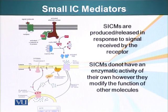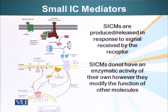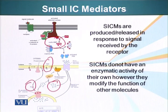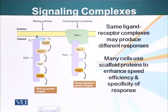Another important part of the signaling system is small intracellular mediators. These are produced and released in response to a signal when their receptor receives a signal. These small intracellular mediators are secondary messenger molecules that do not have enzymatic activity of their own; however, they modify the function of other molecules. Examples include cyclic AMP, DAG (diacylglycerol), inositol triphosphate, and calcium — all small molecules that activate or deactivate the enzymatic activity of other molecules.